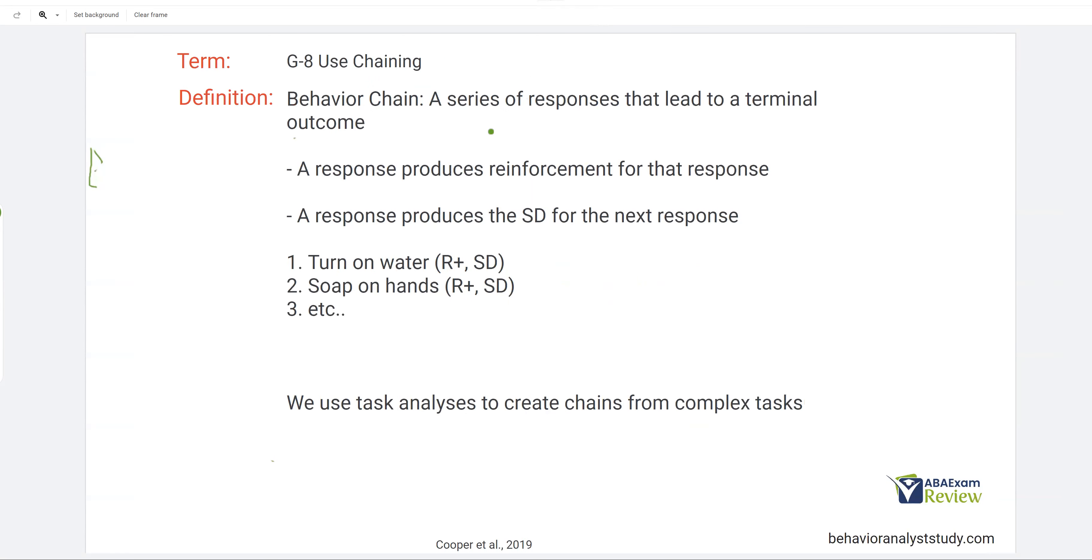So to start, what is a behavior chain? It's simply a series of responses that lead to a terminal outcome. When you watched our shaping video, we talked about the terminal behavior. Where shaping, we try to reach the terminal behavior, which is the final behavior we want to see. It's pretty similar with the chain. You're going to have a series of responses that ultimately lead to your final outcome.